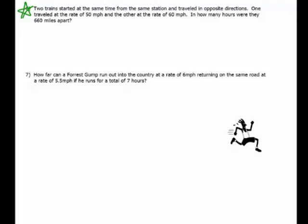I'm going to take care of number 7, the Forrest Gump problem, since that one is one of our remaining types of motion problems. How far can Forrest Gump run out into the country at a rate of 6 miles per hour, returning on the same road at a rate of 5.5 if he runs for a total of 7 hours? So he's starting at home and running out into the country at 6, and returning back at 5.5. We know he's been out there for 7 hours, but we don't know how far this distance is.